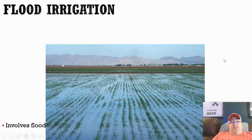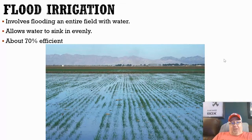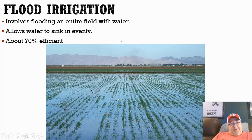Flood irrigation is similar to furrow, except they don't dig the furrows — they just completely flood the entire field with water, submerging all the plants so each gets roughly the same amount of water. It's about 70% efficient, meaning about 30% of that water is lost to evaporation. So it's not entirely the most efficient process.